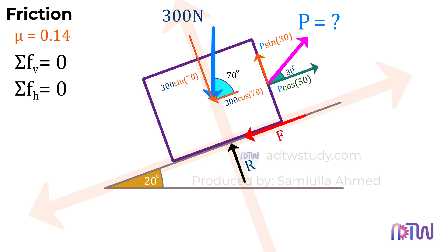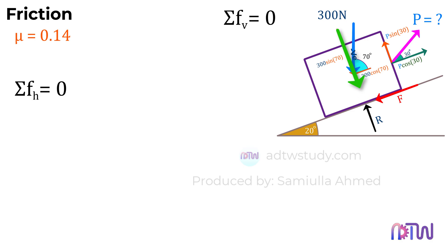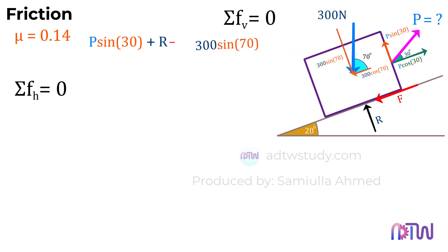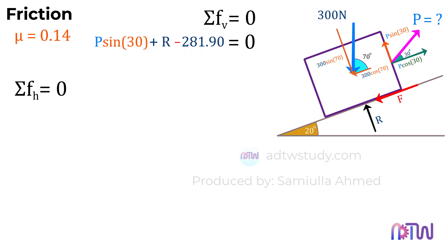Since we now have all the vertical and horizontal forces, we can sum these forces and equate them to zero. Let's first sum the vertical forces. Forces acting up are considered positive, and forces acting down are considered negative. Therefore, we have positive P sine 30 degrees, since it is acting up. Next, we have positive R, since the reaction force is also acting up, and we have minus 300 sine 70 degrees acting down, which equals 281.9 newtons. Since R and P are unknown, we cannot solve further, but we can rearrange this equation to have our first equation with two variables.